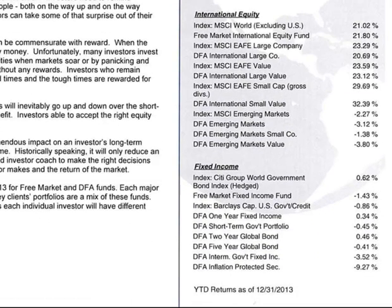We're showing you an overall MSCI World index excluding the U.S. at 21.02, and then your actual fund that holds all your international funds — called the Free Market International Equity Fund — did 21.80. So we are actually outperforming our benchmark and doing well. Below that, the international subcategories are the various components that make up the overall international equity fund index.